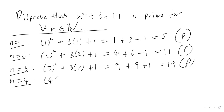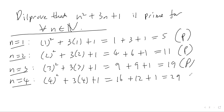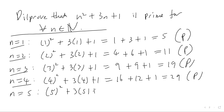Let's keep going. For n = 4: 4² + 3×4 + 1 = 16 + 12 + 1 = 29, which is prime again. For n = 5: 5² + 3×5 + 1 = 25 + 15 + 1 = 41 — again a prime number.